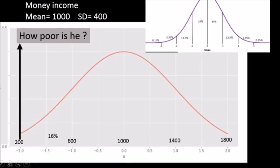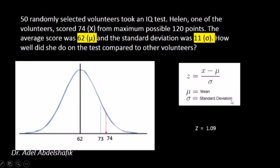What about a person with income 200? That is two standard deviations below the mean, placing him in the lower 2.5% of the community.